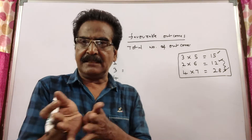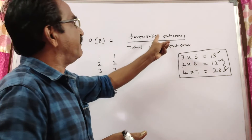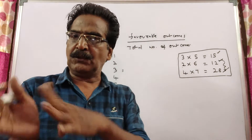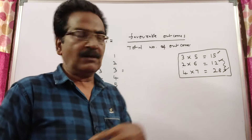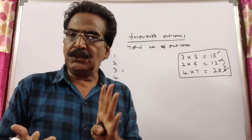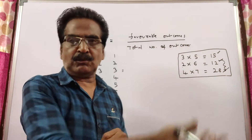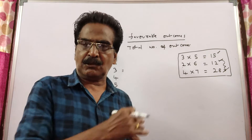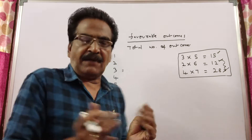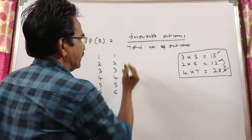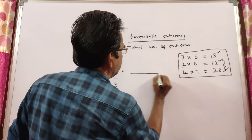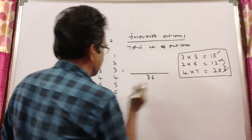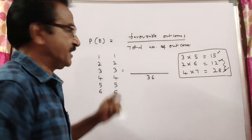The probability of any event is given by favorable outcomes divided by the total number of outcomes. Here two dice are thrown, so the total number of outcomes will be 36 — six into six equals 36.